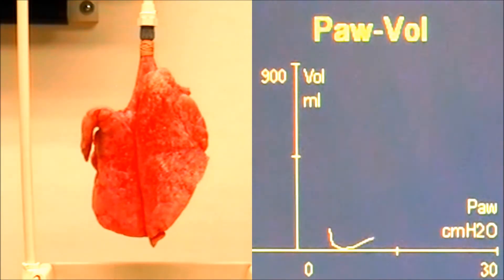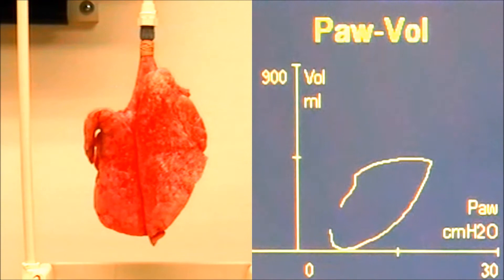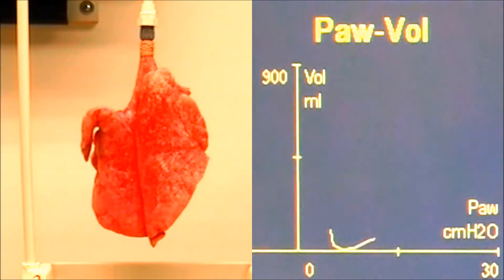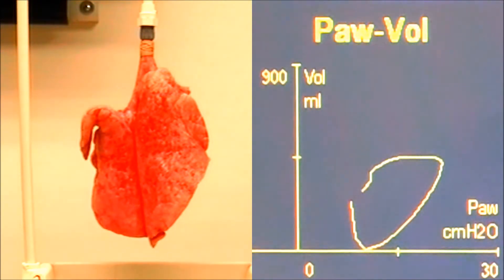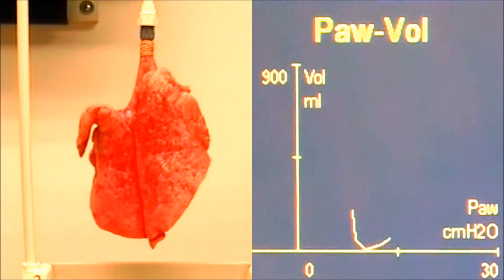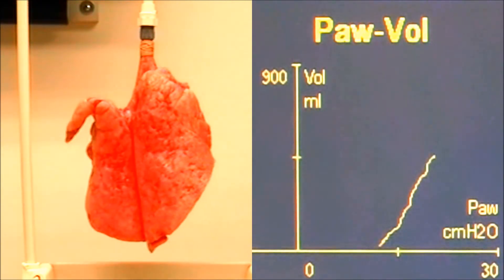The first thing I'm going to do is turn my PEEP up to eight. I'm going to switch over to my bag, turn my APL valve to slightly above 30 to around the 40 range. 30 to 40 is where you're targeting with your sustained recruitment breath. I'll switch over and keep an eye on my lungs as I do this.